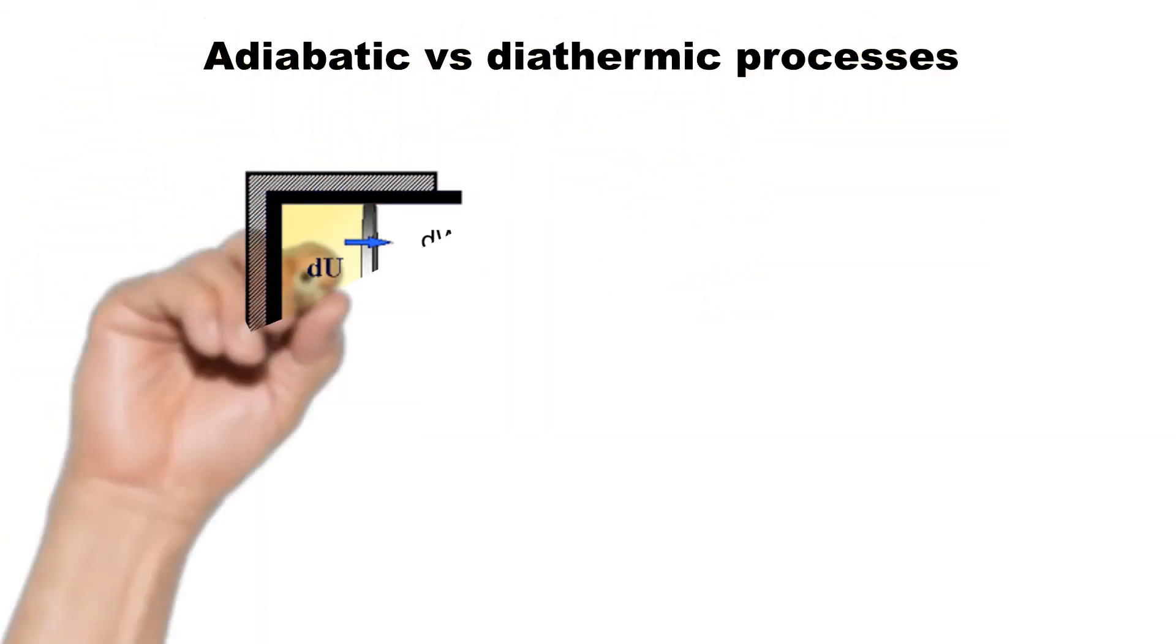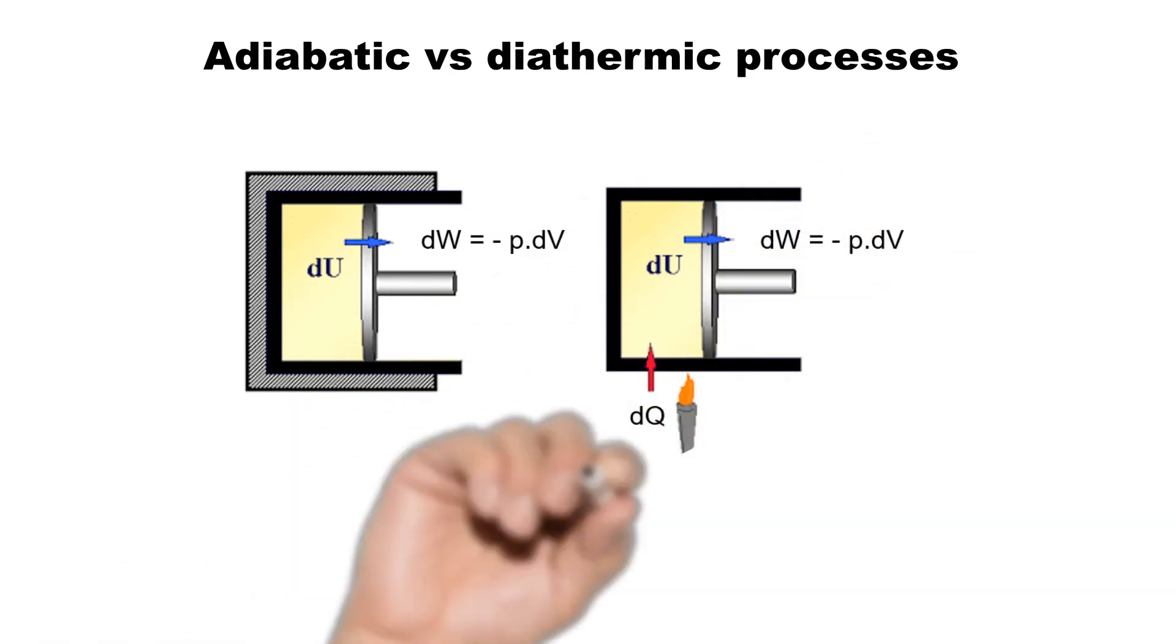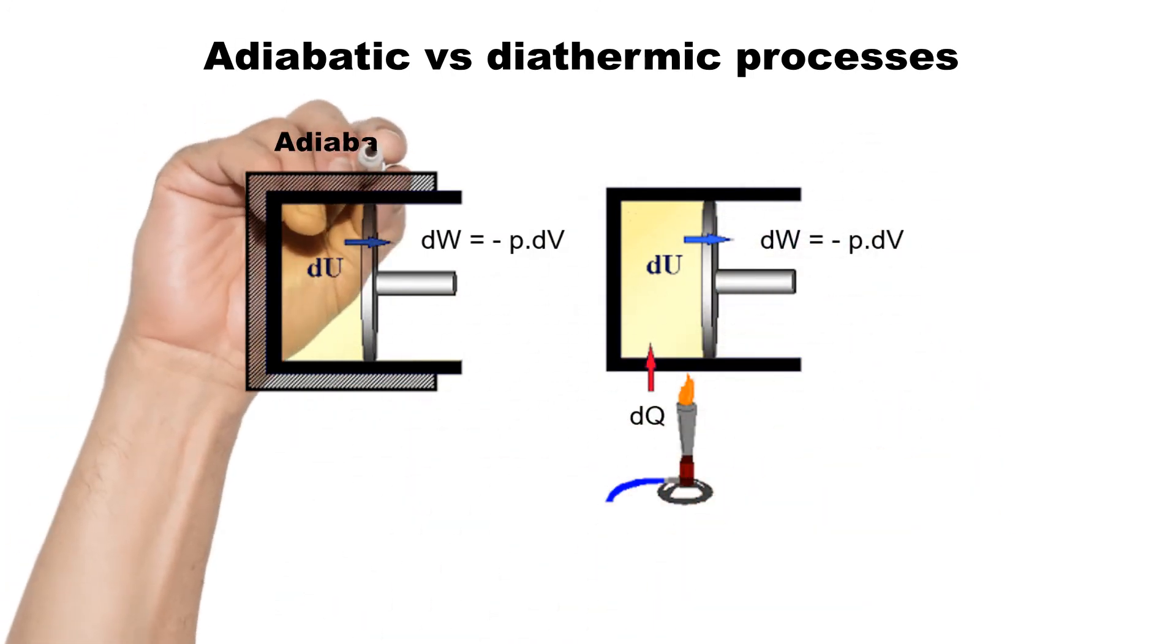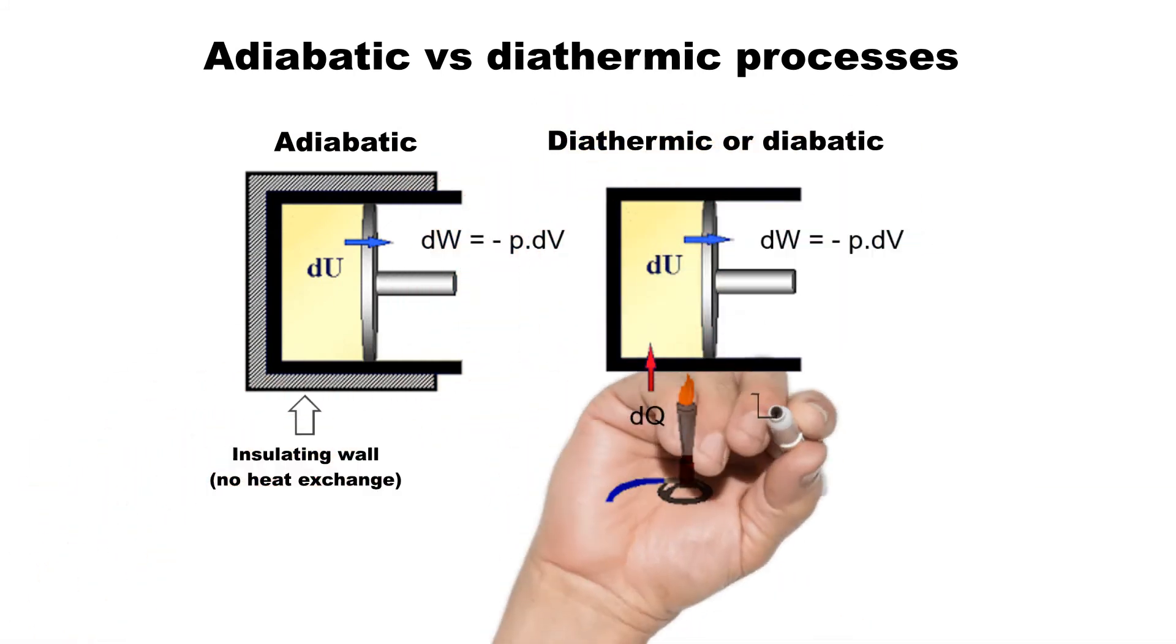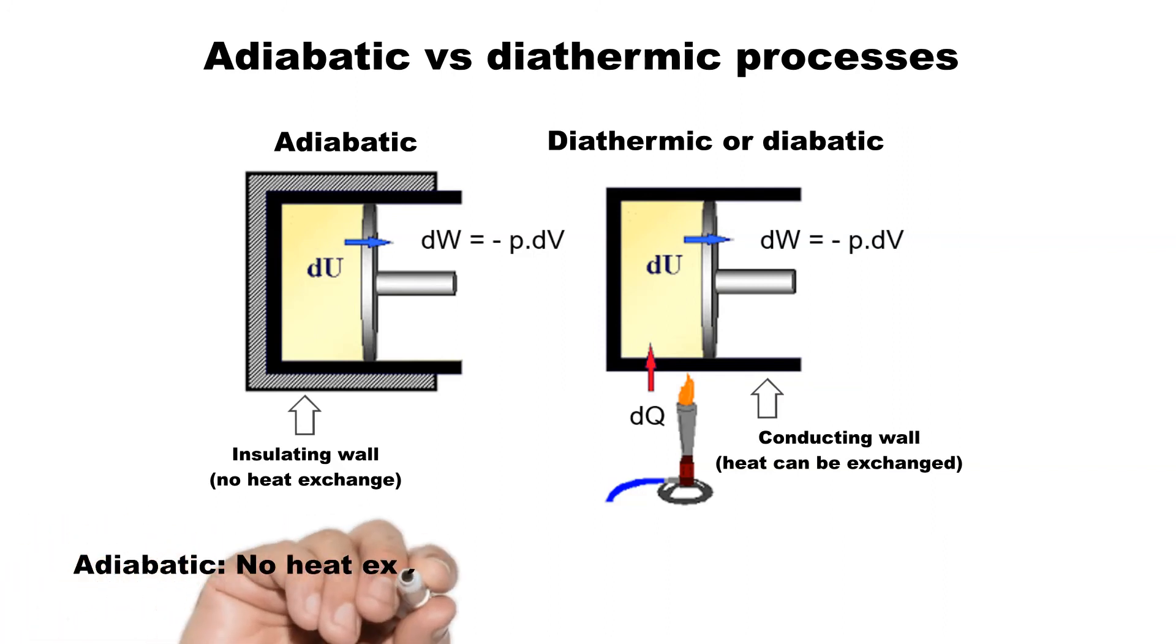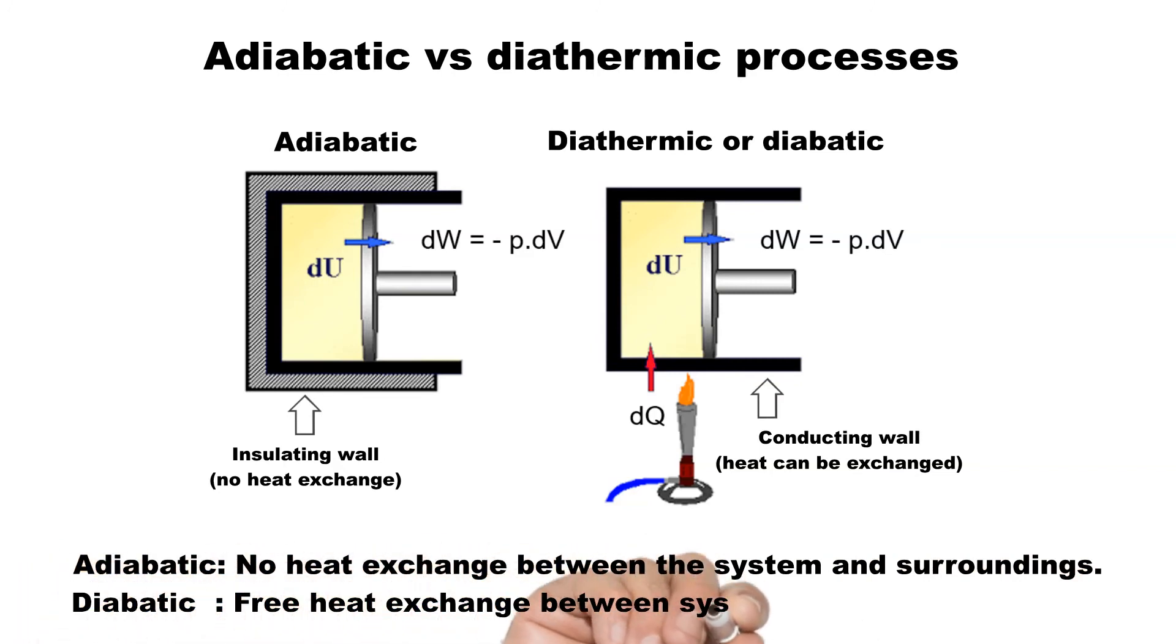An adiabatic process is one during which no energy enters or leaves the system by heat. This is achieved by thermally insulating the walls of the system, or having the process proceed so quickly that no heat can be exchanged. The double walls of a vacuum flask are adiabatic to a good approximation. A process in which heat is freely exchanged between the system and surroundings is called diathermic. An ordinary metal container is diathermic.